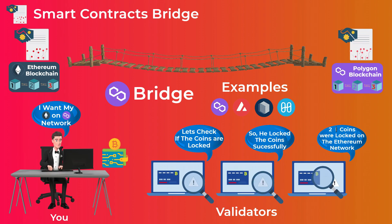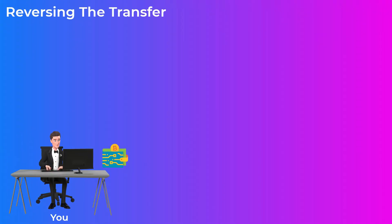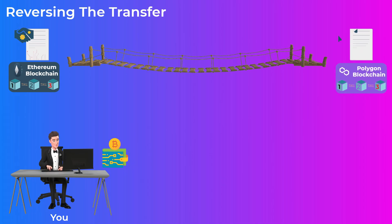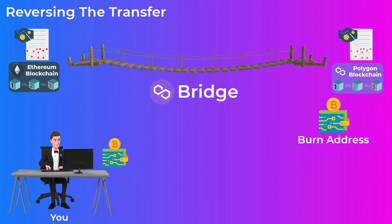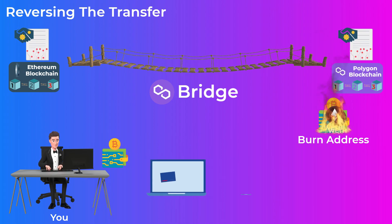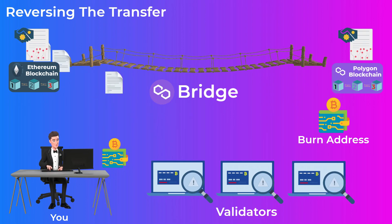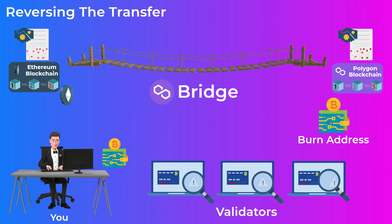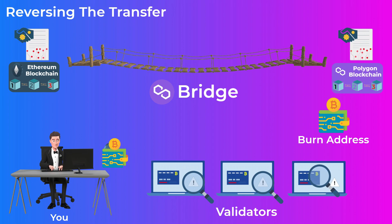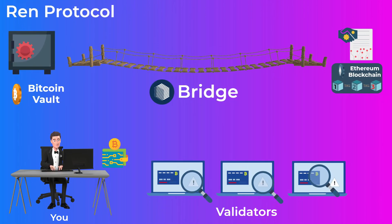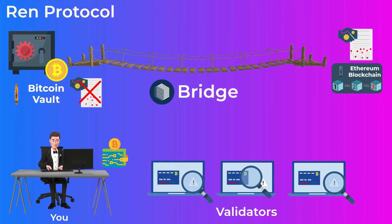All these bridges mint wrapped tokens when you lock your coins on the main blockchain. What if you want to reverse the process and get back your native Ethereum coins? When you use the bridge again, the wrapped Ether tokens you have will be burned — burning tokens means destroying them by sending them to an unusable wallet address. After the tokens are burned, proof of the burn transaction is sent by the validators to the smart contract on the Ethereum blockchain, which then unlocks your Ethereum coins and sends them back to your wallet.